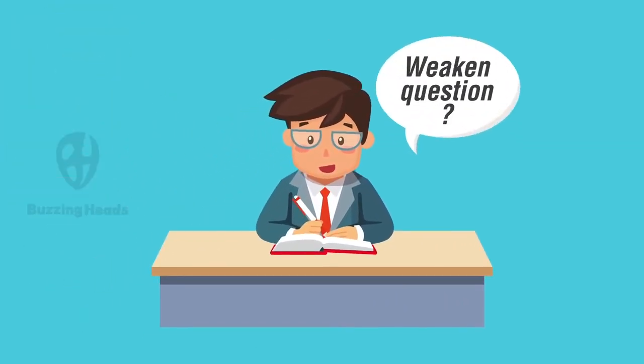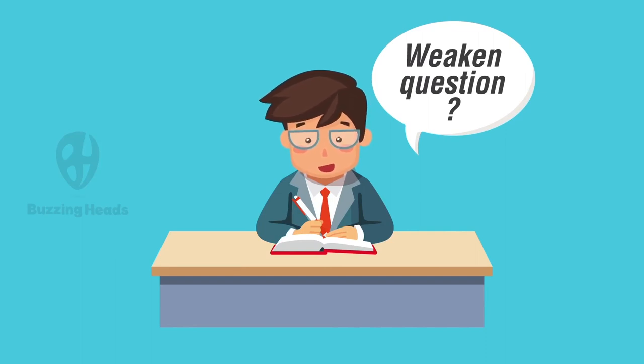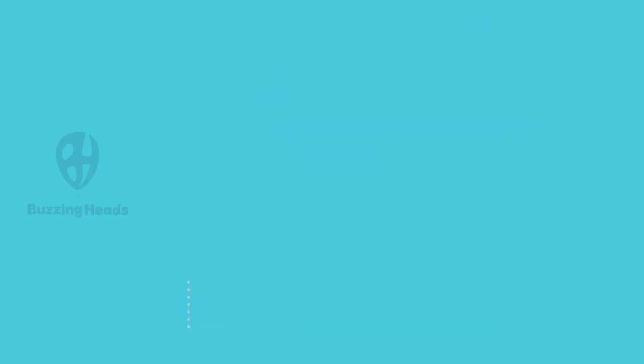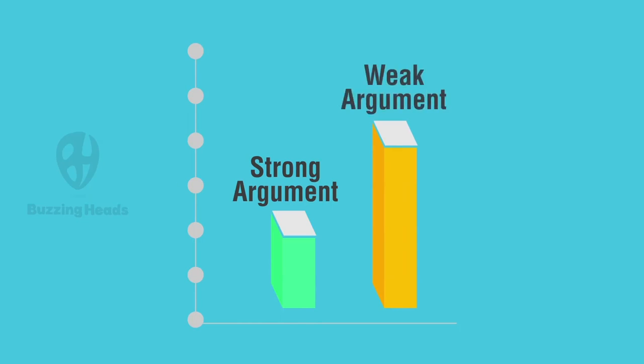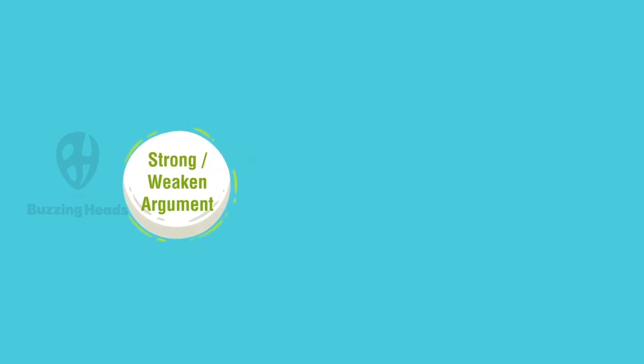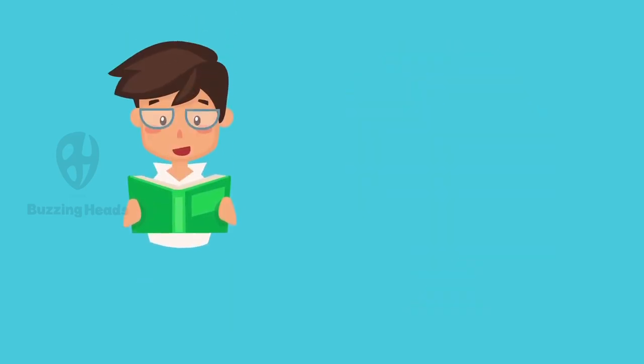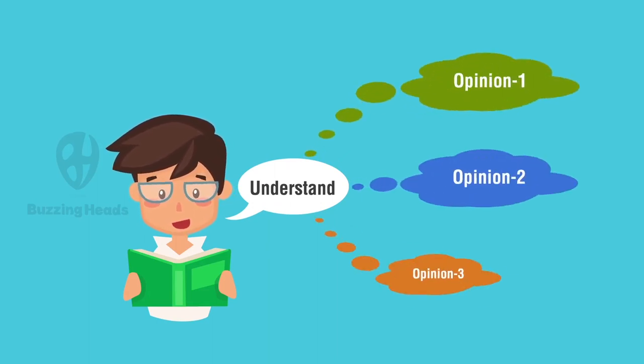It seems logical that if you know a weaken question is a weaken question before reading the stimulus, but it is not that obvious. Sometimes you will have to weaken a fairly strong argument which looks quite logical. Sometimes you will have to strengthen a very weak argument. So we need to judge the argument on its face value, not under the type of question it has been asked. So step one is to understand the argument presented by the author and also take into consideration multiple opinions if there are more than one perspective presented.